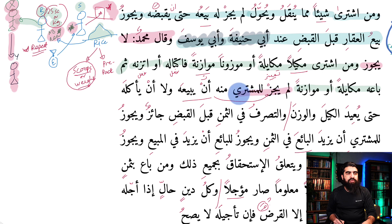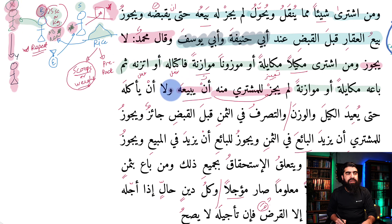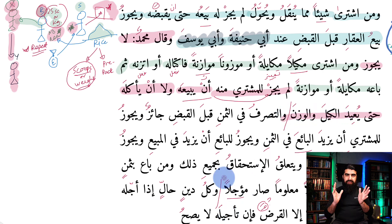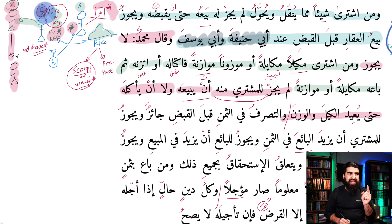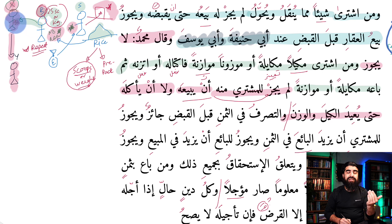So if S measured it inside behind closed doors, B would have to measure it again to sell it to X. But if S measured it in front of B, B is allowed to sell it. However X cannot sell it on to Y until she goes and measures it herself for Y — and so on down the chain. Lam yajuz — it's not ja'iz — lil-mushtari minhu an yabi'ahu, wa la an ya'kulahu hatta yu'ida al-kaylah. That's the masala here.